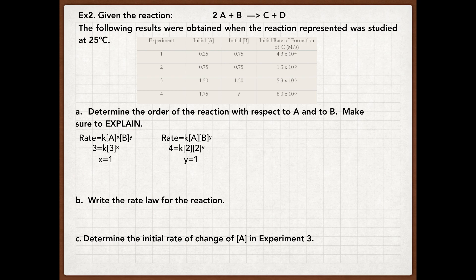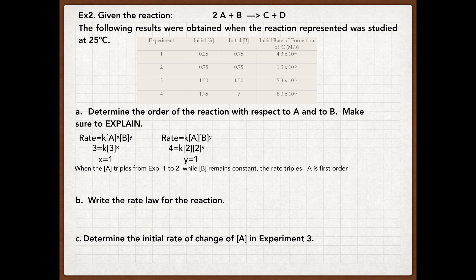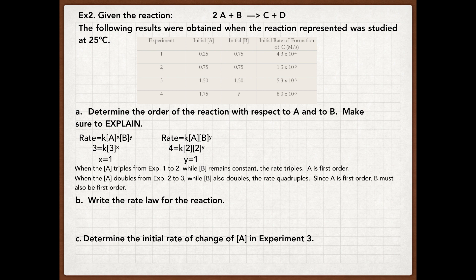In the previous problem each reactant had trials where concentration stayed constant; if that doesn't occur, figure out the order for the one you can, then plug in to determine the order of the other. For the written explanation: when A triples from experiment one to experiment three, the rate also triples — therefore A is first order. For B, when A doubles from experiment two to experiment three, B doubles while the rate quadruples; since A is first order, B must also be first order. So the rate law is rate equals K times concentration of A times concentration of B.